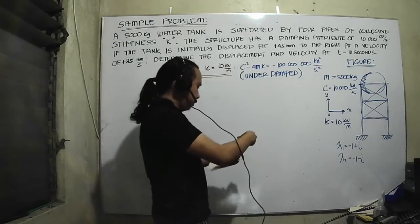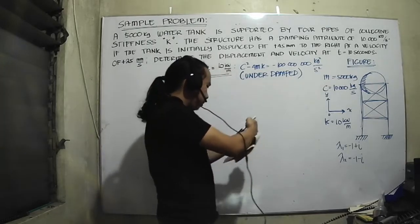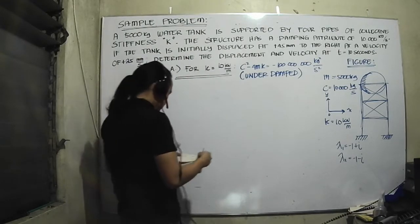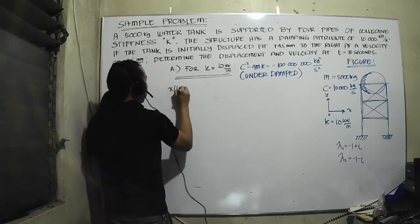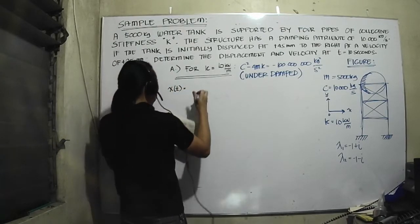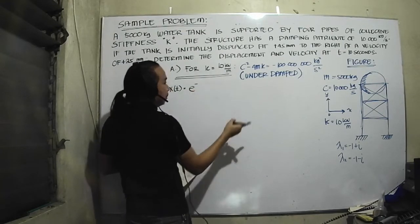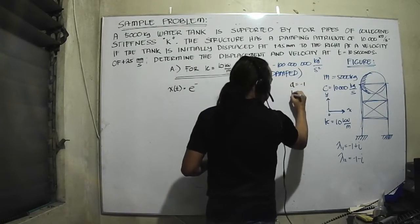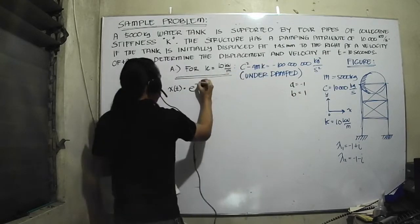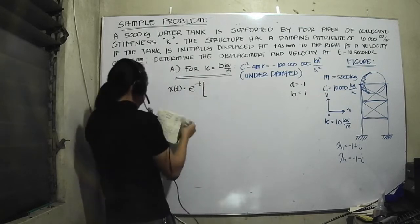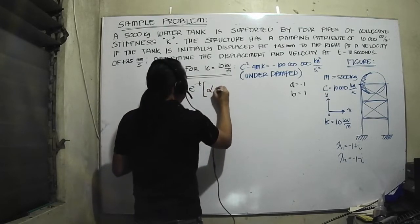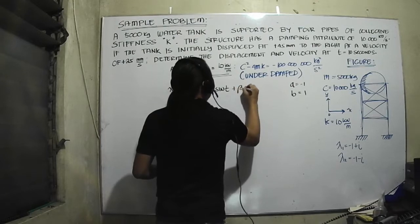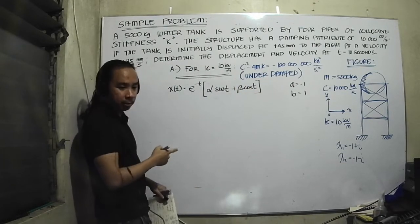We've got the lambdas. Now we need to go to the equation itself. Our displacement solution will take the form: displacement is equal to e to the negative t multiplied by alpha sin t plus beta cos t.